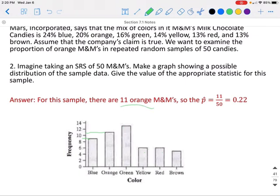If we say in our sample we had 11 orange ones, that would be 11 out of 50, which would give us a p̂ of 0.22. Now remember, this does need to be a p̂ because we are looking at the proportion of a sample, not the entire population.